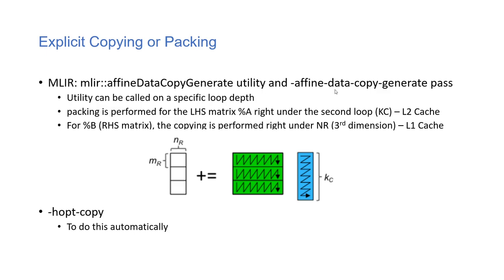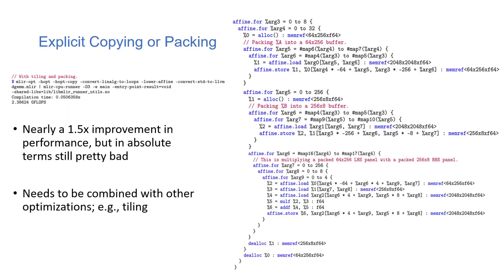MLIR libraries can help with this through the affine data copy generate pass. For the left-hand side matrix A, packing is done in the second loop to exploit the L2 cache (shown in green). For the right-hand side matrix B, packing is done in the third loop to exploit the L1 cache. This is captured automatically in MLIR passes called HOPT copy.